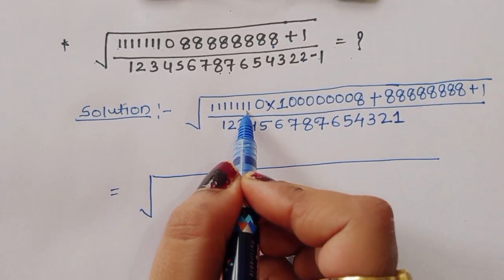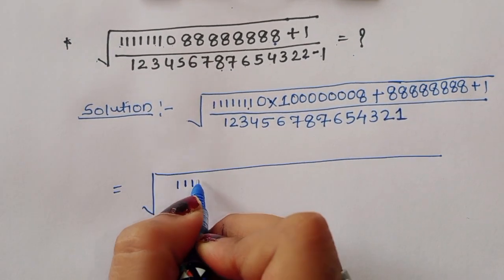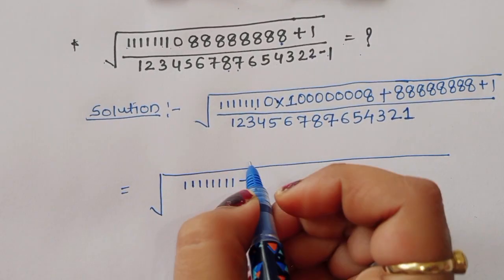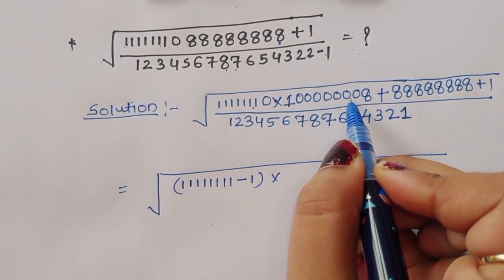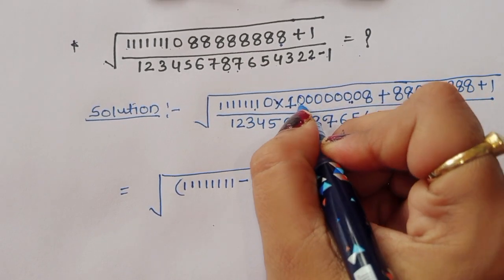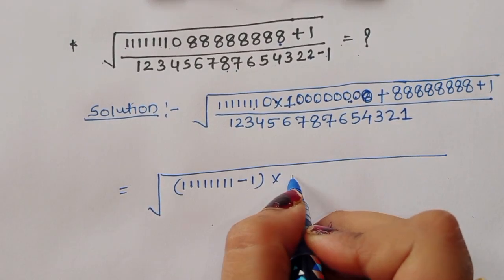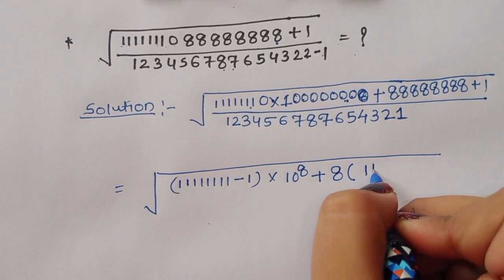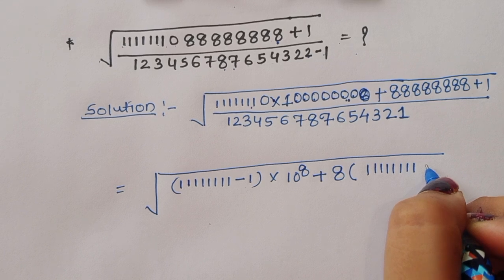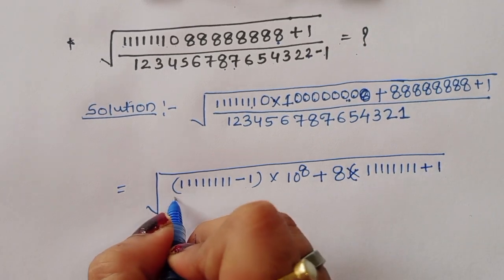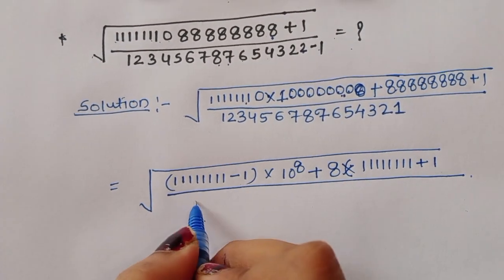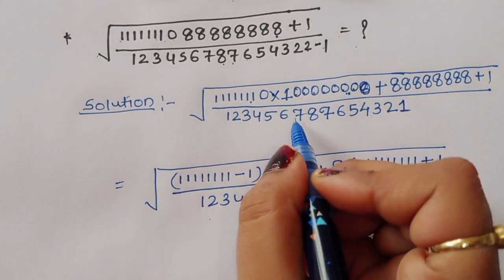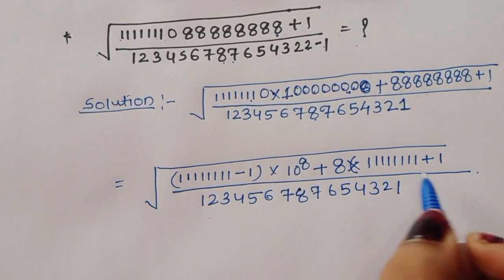Now we can write this as 7 times 10^8, we can write as 8 times 11111111 minus 1 times 11111111, then bringing terms together: 8 times 10^8 plus 8 times 11111111 plus 1, divided by the same number 12345678765432, which equals 1.